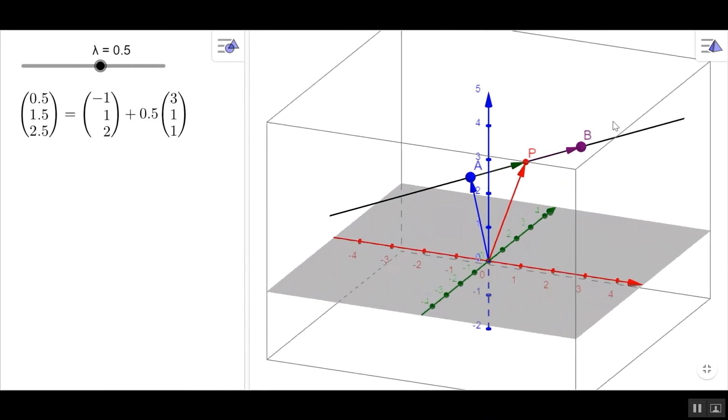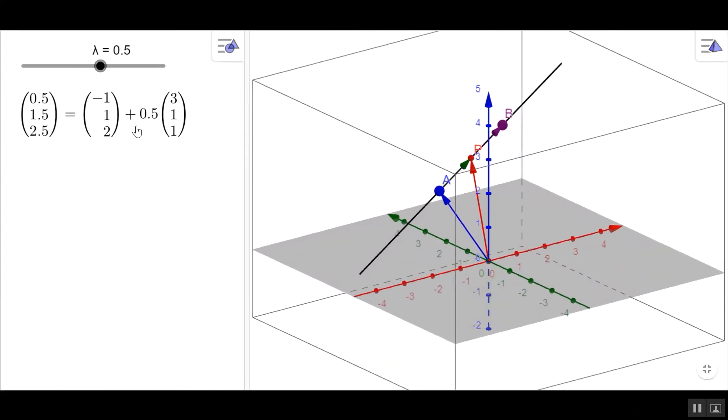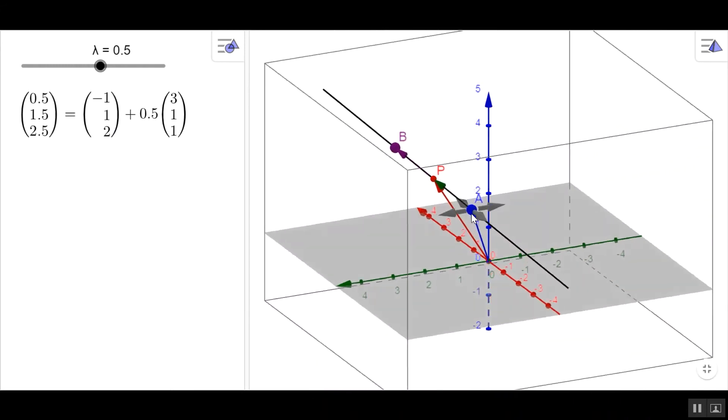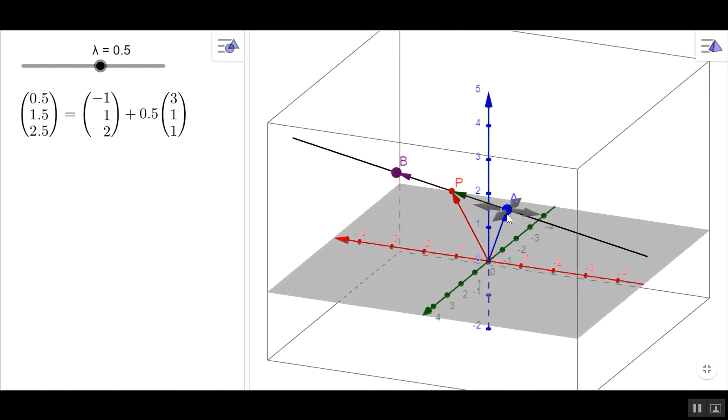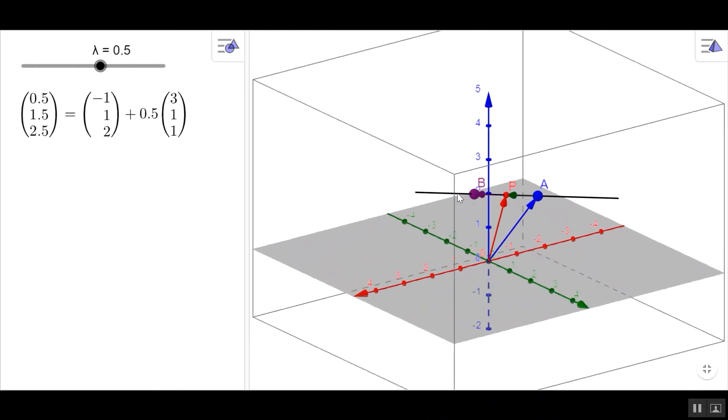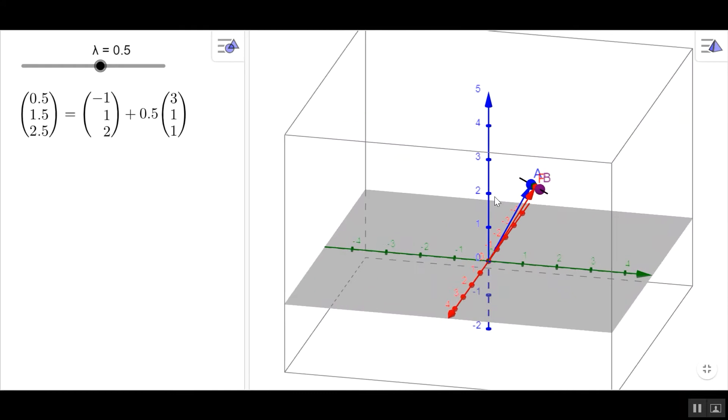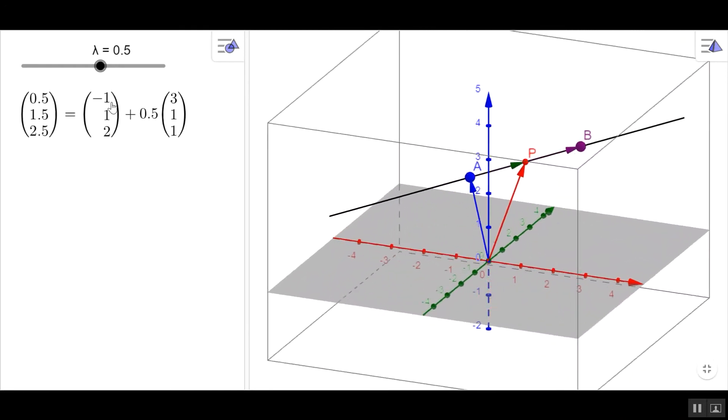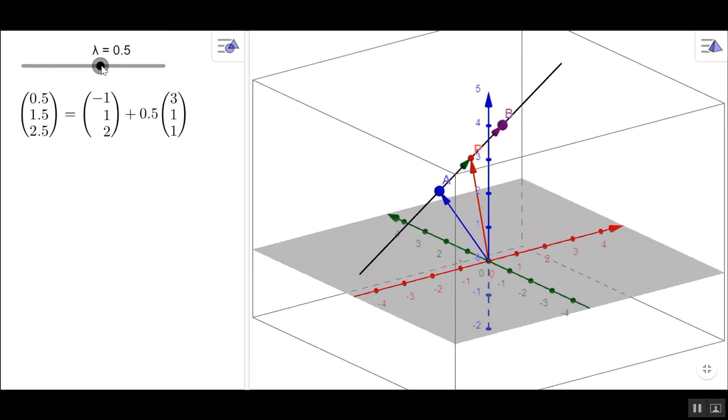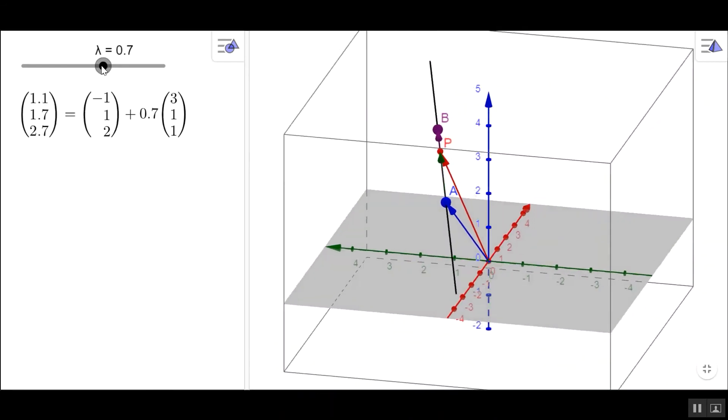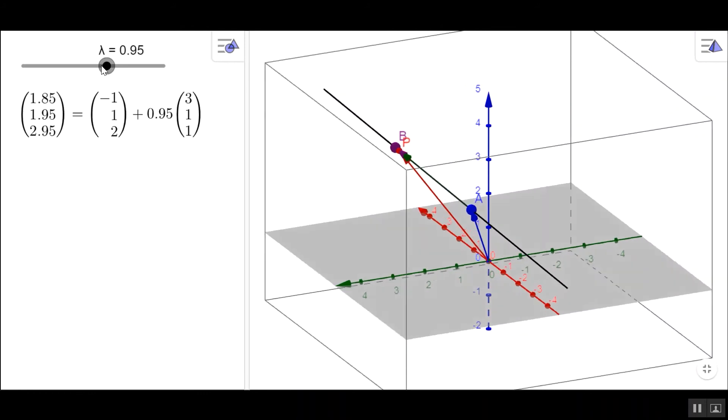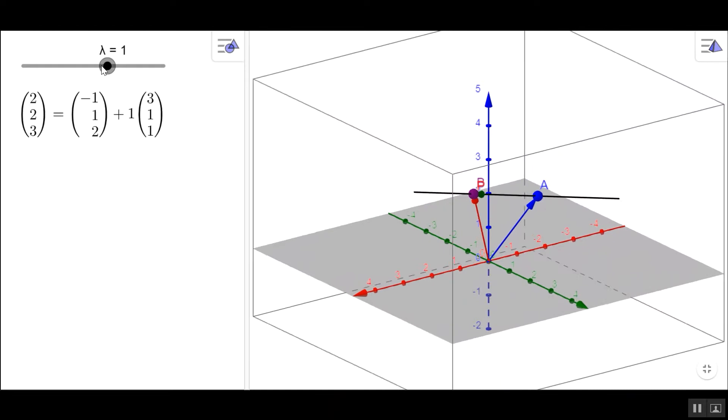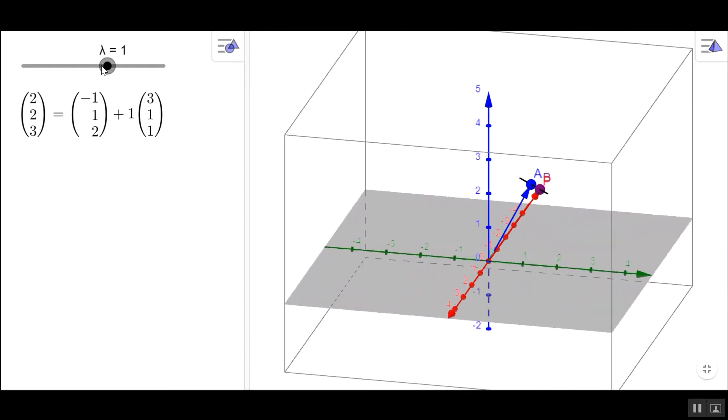And on here you can see that the vector equation is OA plus Lambda AB. You can see the blue vector OA, and then here there is a vector A to B. And I can define any point on that line by choosing a particular value of Lambda. We can then start visualizing how that's working by changing the value of Lambda to get different specific points. So for example, when Lambda is 1, OA plus 1 lot of AB will be the vector OB and takes it to point B.